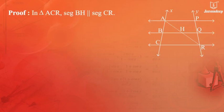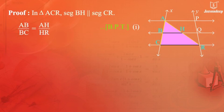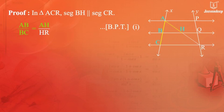Proof: In triangle ACR, segment BH is parallel to segment CR. Therefore, according to the Basic Proportionality Theorem, we get AB upon BC is equal to AH upon HR. (Equation 1)